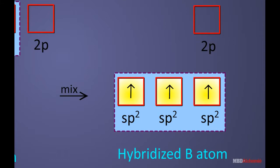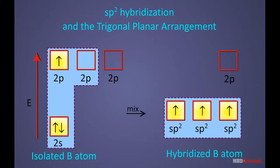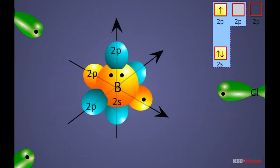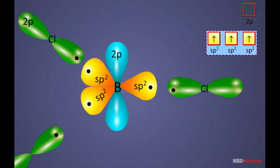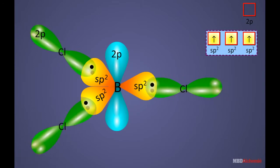These 3 hybrid orbitals are oriented in a trigonal planar arrangement. Each of these sp2 hybrid orbitals then overlaps with a 2p orbital of a chlorine atom to form 3 BCl bonds.